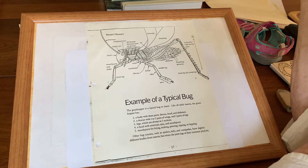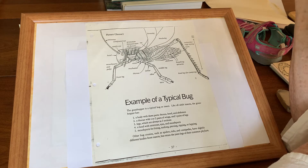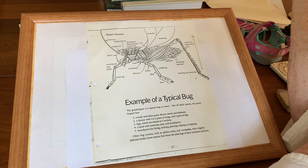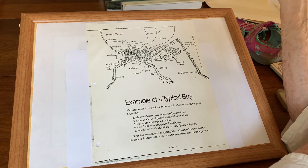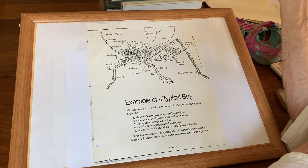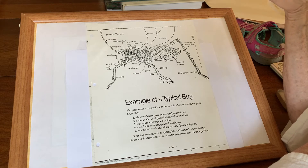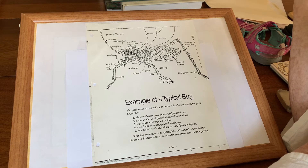You need to have the three body parts — the head, the thorax, and the abdomen. You'll need to have three pairs of legs attached to the thorax. And then it's your choice if you have wings and if you have the hard outer shell or not.